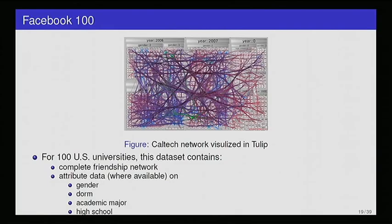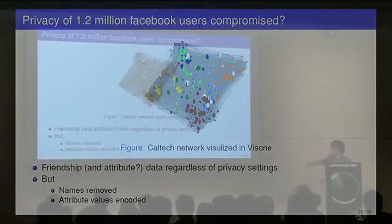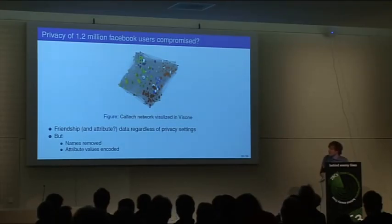For 100 universities we have the complete friendship network, and we have data on gender, dorm, academic major, and the high school that the user attended. One interesting point is that the friendship network is complete regardless of the privacy settings. So if a user said they only want their friends to know about their friendship network and their profile, it didn't matter. Facebook just included everything. And they did take some measures to try to keep this data anonymous. They removed the names and they encoded the attributes. So you wouldn't know if someone was male or female. There was gender one and two.